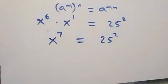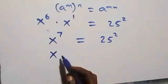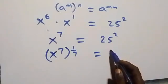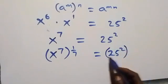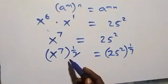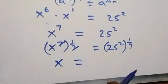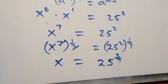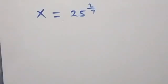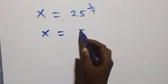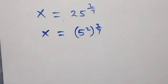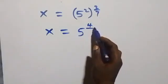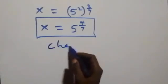From what we have, we raise both sides to the power of 1 over 7. So x raised to power 7, raised to power 1 over 7, equals 25 squared raised to power 1 over 7. The powers cancel on the left, giving x equals 25 raised to power 2 over 7. Writing this in base 5: 25 is 5 squared, so x equals 5 squared raised to power 2 over 7, which gives x equals 5 raised to power 4 over 7.